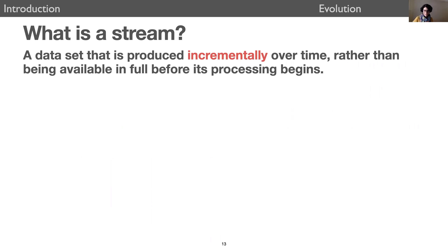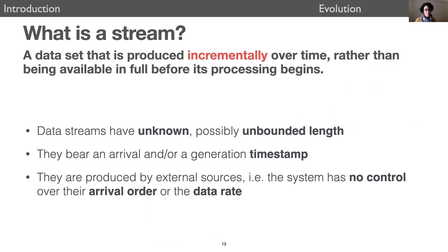Now let's take a step back and examine the history of the stream processing field and evaluate its current status. First, we could use a definition. A data stream is a data set that is produced incrementally over time, rather than being available in full before its processing begins. Data streams have some unique characteristics: their length is unknown and possibly unbounded, their elements generally bear a timestamp, and they are produced by external sources. As a result, the system ingesting or processing the stream has no control over the arrival order of its elements or the data rate.